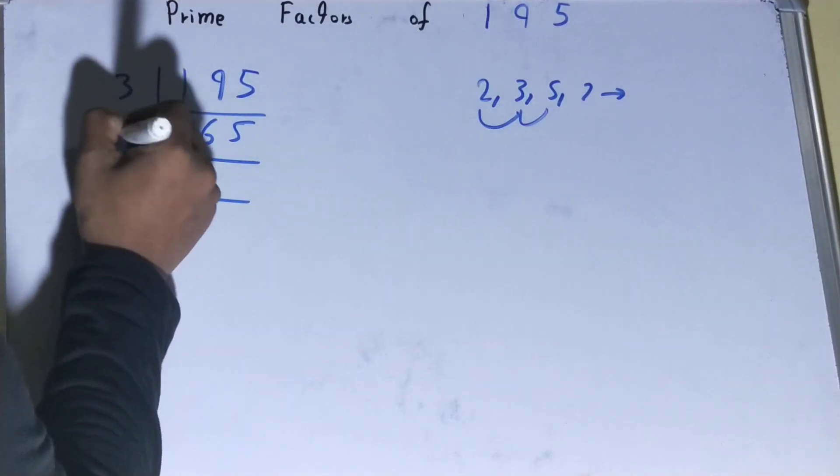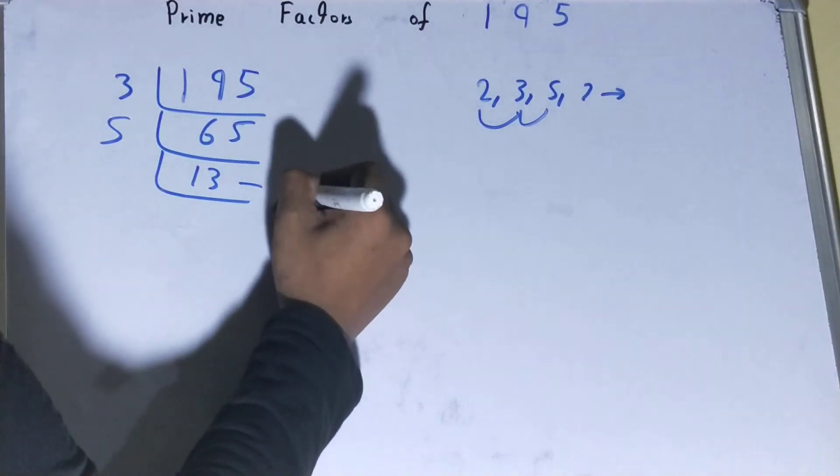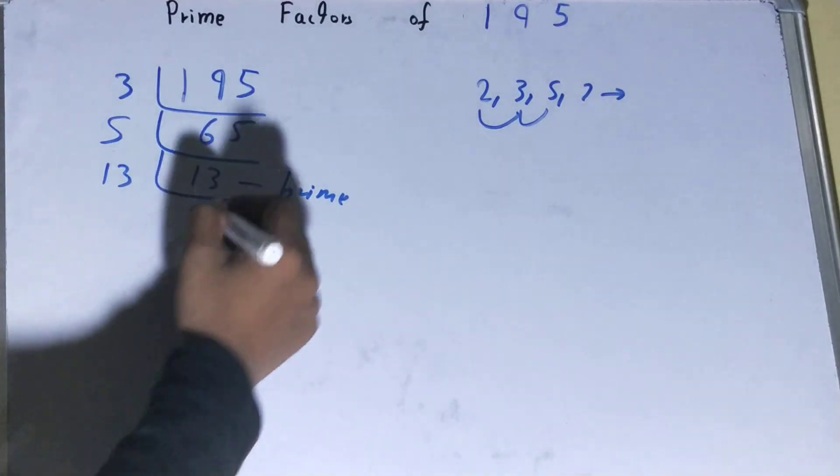Yes, it is divisible. Five thirteen times, and thirteen is further not divisible by five because thirteen is a prime number. So to divide this thirteen, you need thirteen on the left-hand side also.